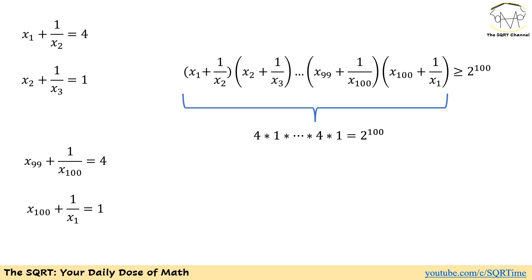If you multiply all these values together, we have 50 fours and 50 ones — wait, we have 50 fours — and at the end we get 2 to the power of 100. So the left-hand side equals exactly 2 to the power of 100, which we found must be greater than or equal to 2 to the power of 100.